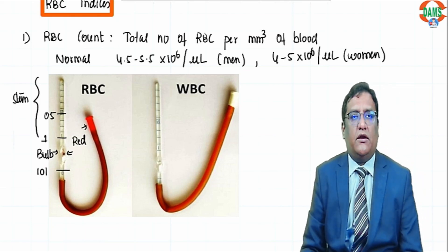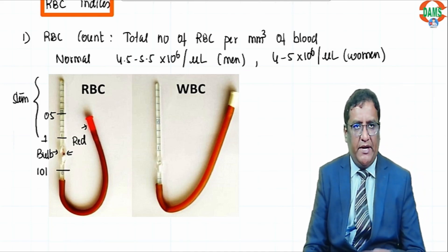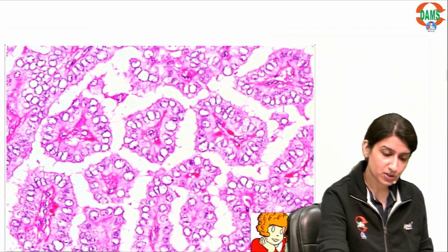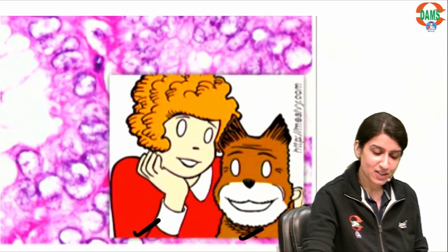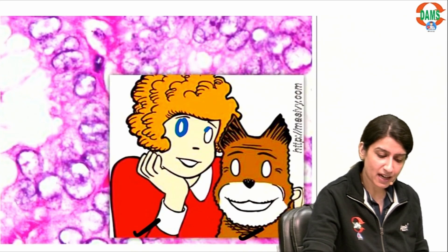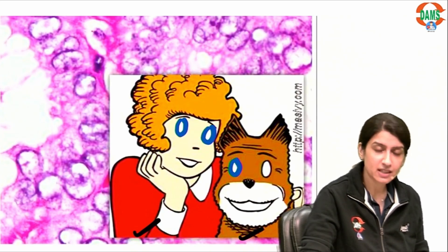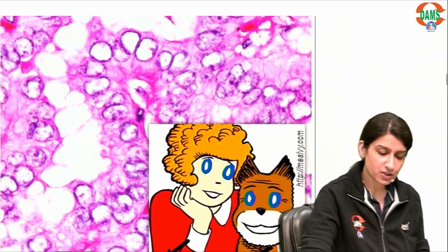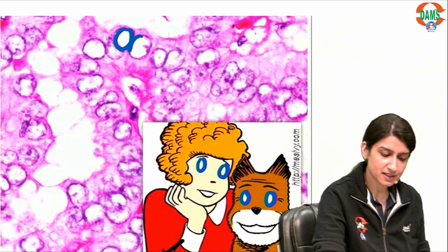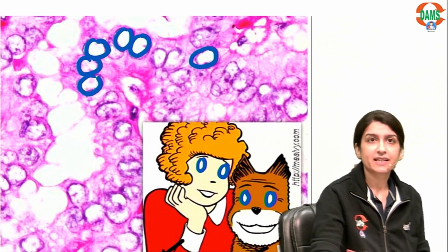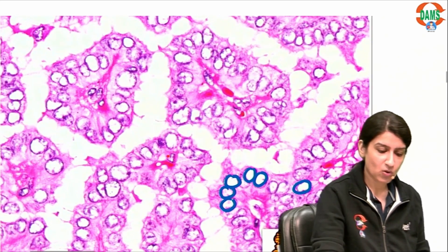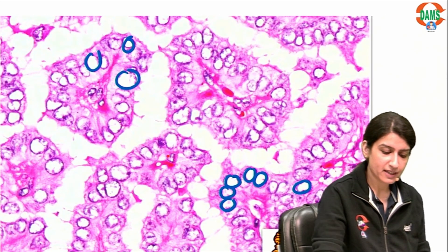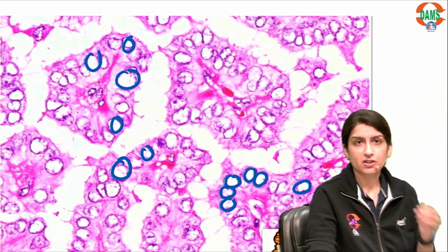Now, have a look here — this is your Orphan Annie eye. Orphan Annie's eyes and her dog's eyes are ditto, same as my cells also — optically clear nuclei. These cells are completely clear, just like Orphan Annie's eye. So all these are your Orphan Annie eye, optically clear nuclei.